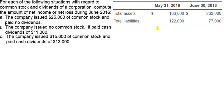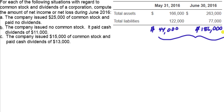On May 31, 2016, the company had $166,000 in assets and $122,000 in liabilities. So $166,000 minus $122,000 gives $44,000 worth of equity on May 31. Fast forward one month: the company has $263,000 worth of assets and liabilities decreased to $77,000. So $263,000 minus $77,000 gives $186,000 worth of stockholders' equity on June 30. Subtracting: $186,000 minus $44,000 means equity increased by $142,000 during June.